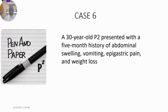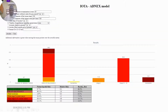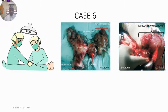Case 6 was a 30-year-old para 2 who presented with a 5-month history of abdominal swelling, vomiting, epigastric pain, and weight loss. When we inputted this information into the ADNEX model, the highest risk was for malignancy, with the highest subgroup being stage 2 to 4. Clinically it was stage 4 disease. She had surgery and histopathology confirmed it was cystopapillary carcinoma with metastasis in the cervix.